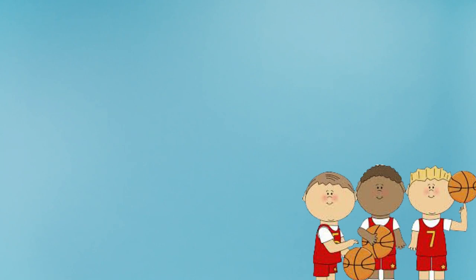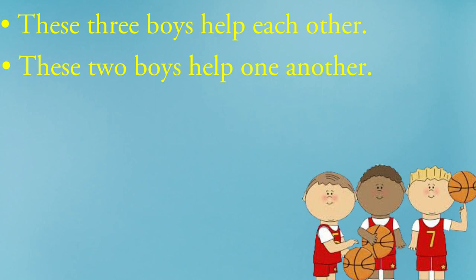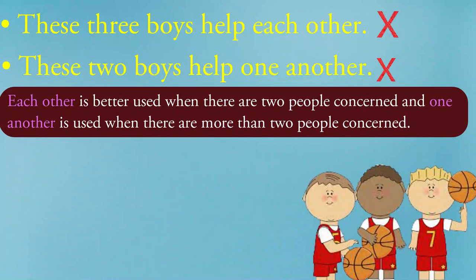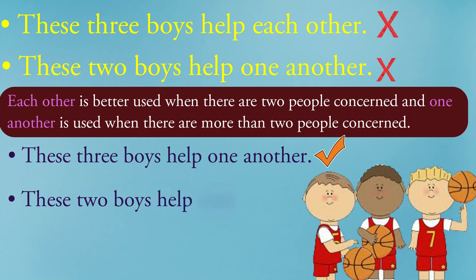Now look at these sentences: 'These three boys help each other' and 'These two boys help one another' — both are incorrect. Please note, 'each other' is better used when there are two people concerned, and 'one another' is used when there are more than two people concerned. Now repeat the correct sentences after me: These three boys help one another. These two boys help each other.